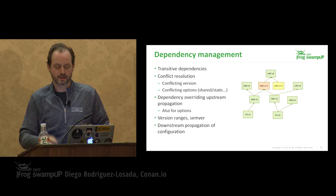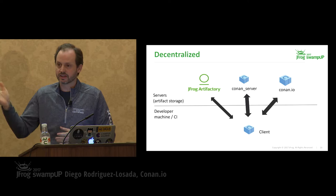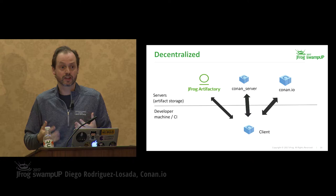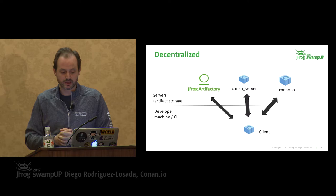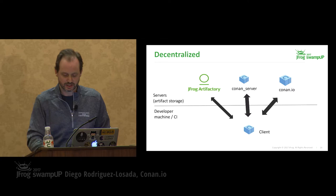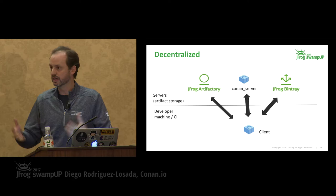Here is the basic architecture of Conan. You have a client-side command-line tool, and several servers used for artifact storage. There is an open source server called Conan Server. There is JFrog Artifactory, which is the solution used in companies to scale to big teams. And there is Conan.io — the central public repository — which is going to be replaced by Bintray. Bintray is much more feature-rich, with more security and scalability. It is a huge step forward for distributing open source C++ packages to the world.